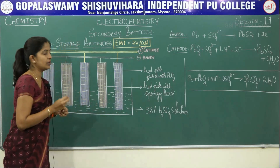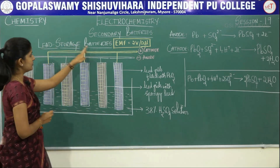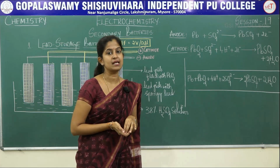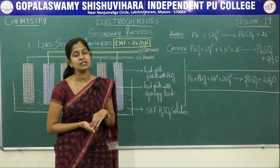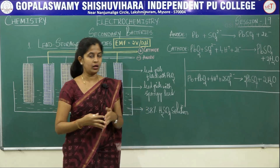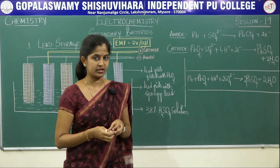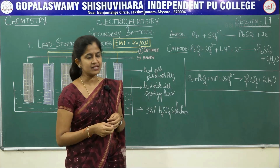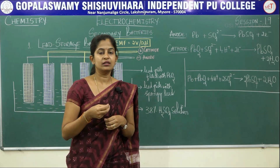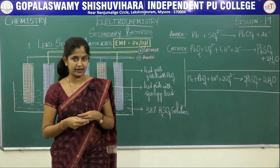Today we will be discussing about one such type of secondary battery — lead storage batteries. As I have told you, lead storage batteries are used in automobiles. The large batteries we see in your cars and small batteries in scooters, bikes, etc. — all these are lead storage batteries. They are also simply called sulfuric acid batteries, because the electrolyte here is sulfuric acid.